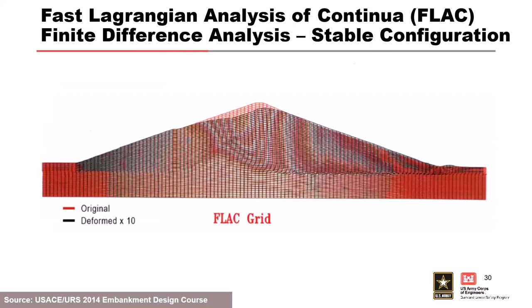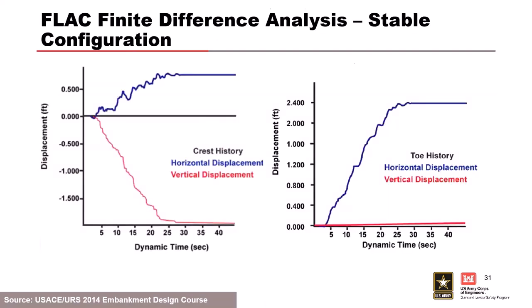This stable result shows that the crest will settle quite a bit and have some issues, but the embankment maintains its overall geometry. From FLAC you get time versus displacement at the crest and toe. The crest displacement settles in and the embankment becomes stable. At the toe, there's quite a bit of horizontal displacement — upwards of two feet — but no vertical movement, which makes sense because the toe is just going to slide out, not settle.